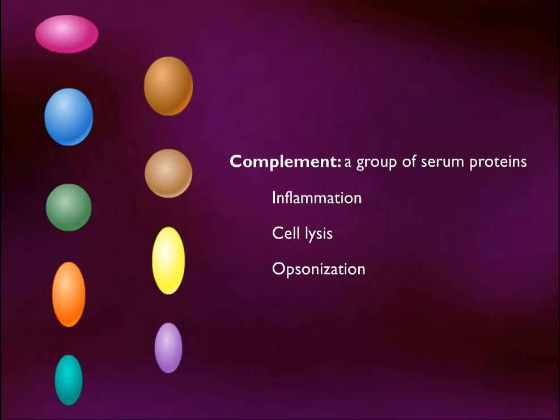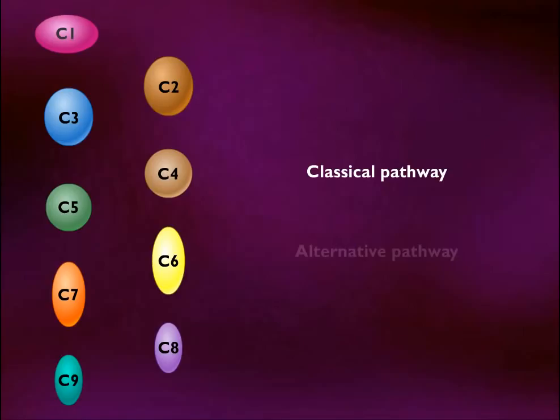The major components are C1 through C9, named in the order that they were discovered, not in the order in which they function. The complement cascade can be activated by the classical pathway or by the alternative pathway.